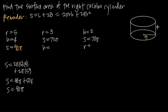If we wanted a decimal approximation, we could plug in 3.14 for π. If we wanted a fractional approximation, we could plug in 22/7 for π. But in this video, we're going to leave our answers in terms of π to give an exact answer. So the surface area of this cylinder with radius 5 and height 4 is 90π.